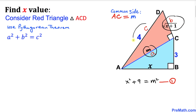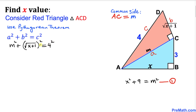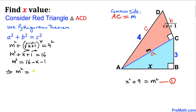Filling in the blanks: a is m, b is √(x + 1), and c is 4. Substituting: m² + (√(x + 1))² = 4². The square and square root undo each other, giving m² + x + 1 = 16. Moving x and 1 to the right: m² = 16 − x − 1, so m² = 15 − x. This is equation number two.